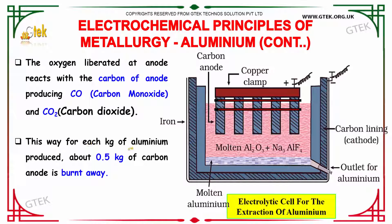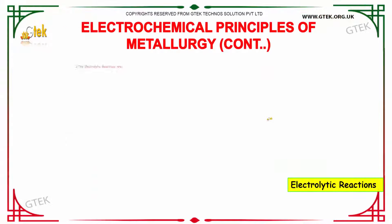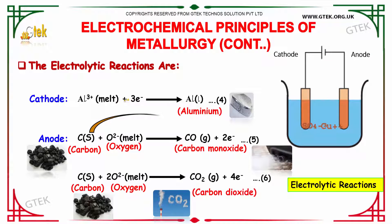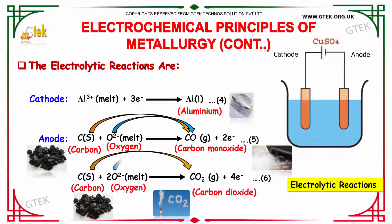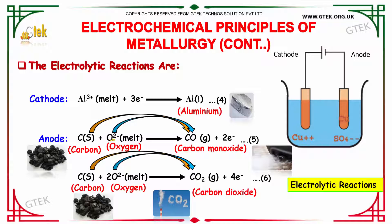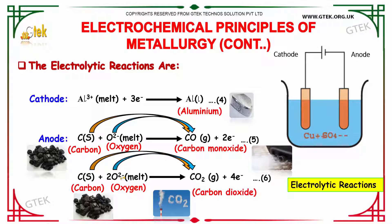For each kilogram of aluminium produced, about 0.5 kg of carbon anode is burnt away. At the cathode, Al³⁺ reacts with 3 electrons to give aluminium. At the anode, carbon reacts with O²⁻ ions to give carbon monoxide and 2 electrons, and carbon reacts with O²⁻ ions to give carbon dioxide and 4 electrons.